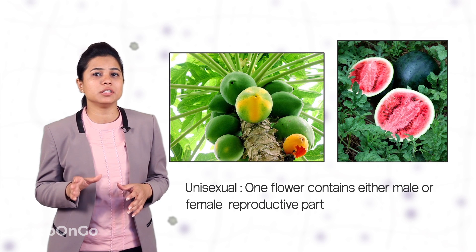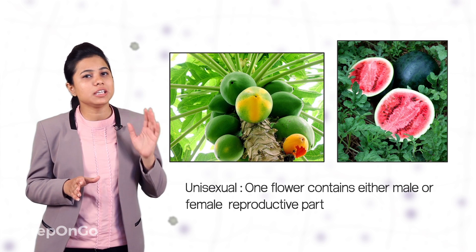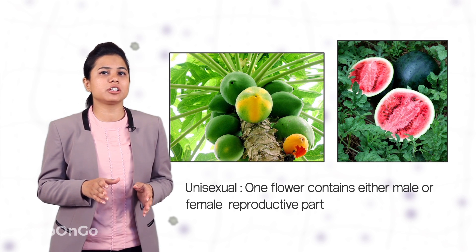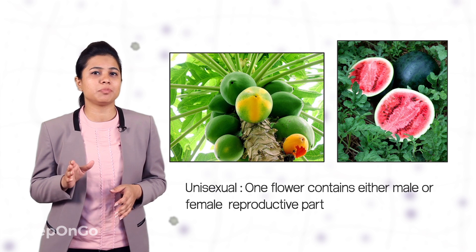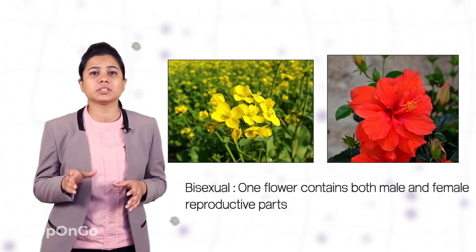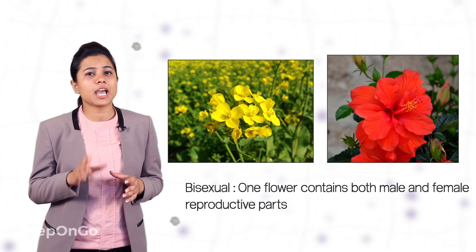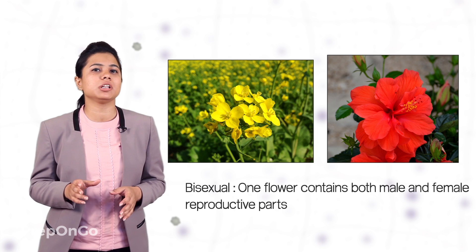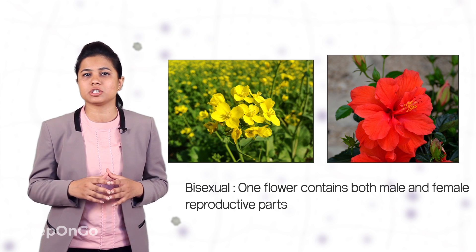In sexual reproduction there is a male reproductive part and a female reproductive part. Some flowers like papaya and watermelon contain either the male reproductive part or the female reproductive part and are unisexual. But in some flowers like hibiscus and mustard they have both male and female reproductive parts and are called as bisexual.